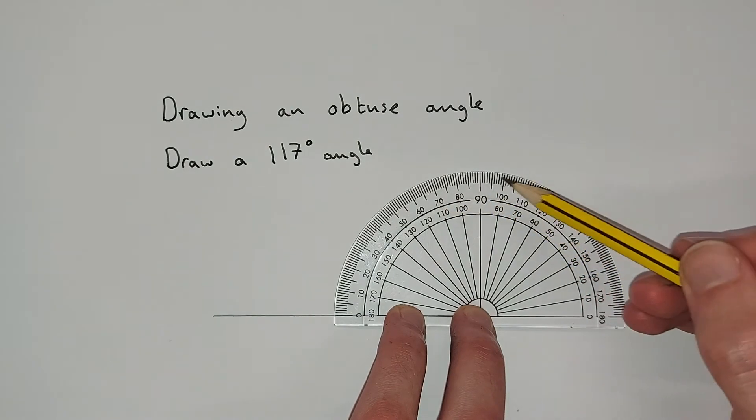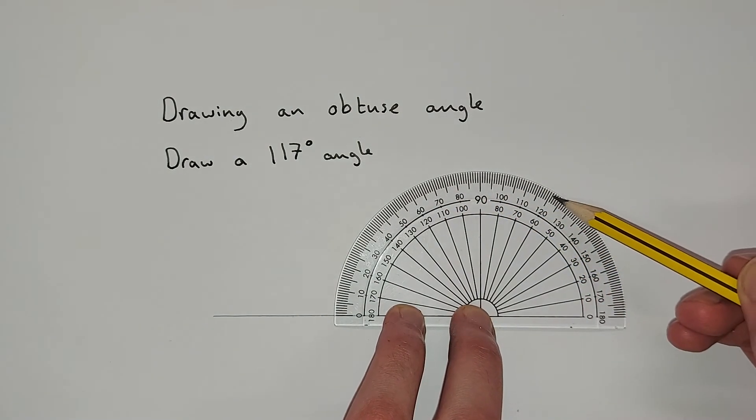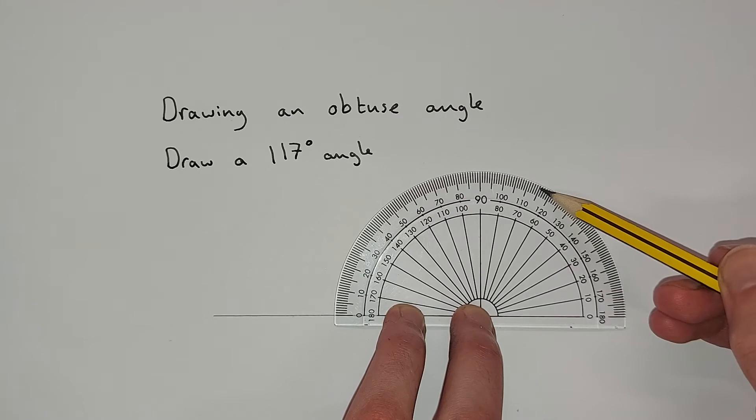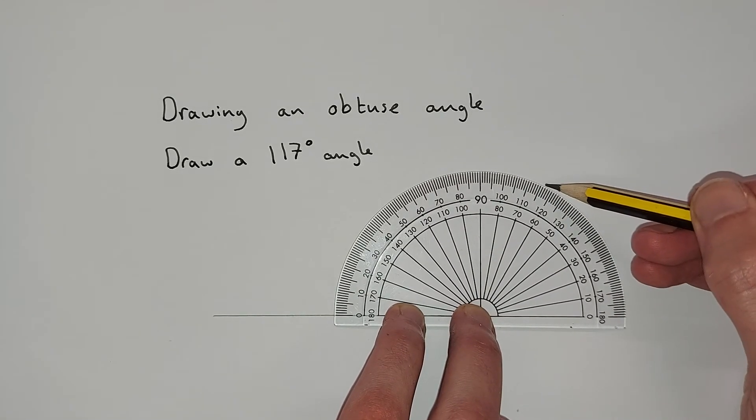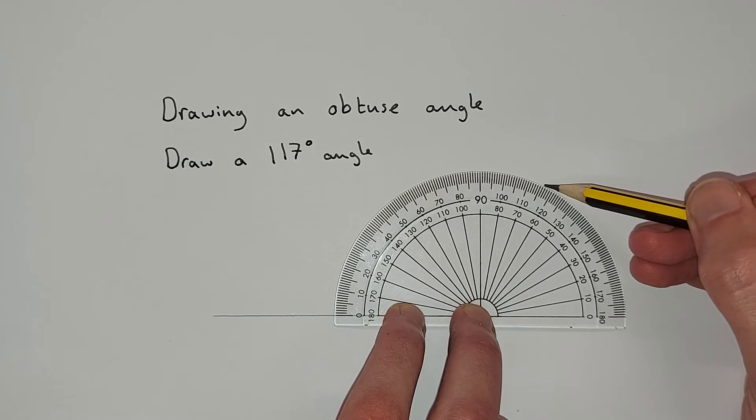So we've got all the way around, here's 110 and 120, so it's going to be between these two. That would be 115, 120, so it's going to be between them. So the little marks are going to be 115, 16, 17.